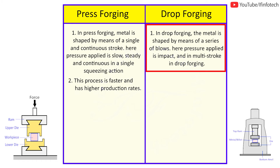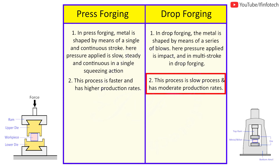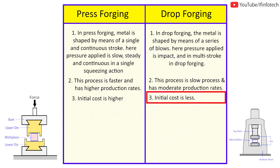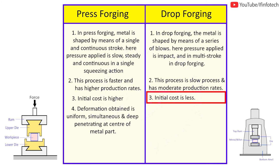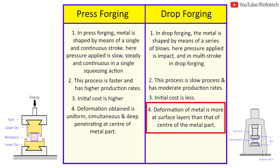Press forging is a faster process and has a higher production rate, whereas drop forging is a relatively slow process with a moderate production rate. The initial cost of press forging is higher than drop forging. In press forging, the deformation obtained is uniform, simultaneous, and deep-penetrating to the center of the metal part, whereas in drop forging, deformation is more at the surface layer than at the center.